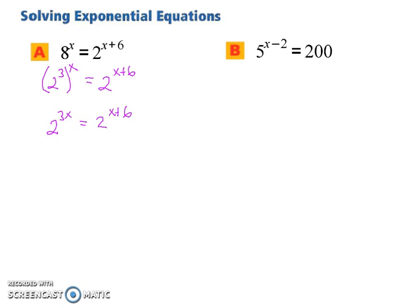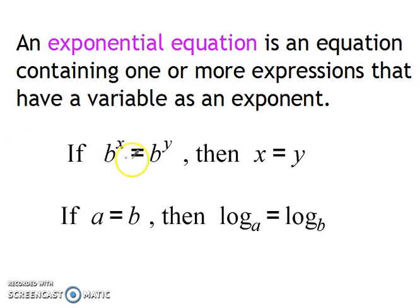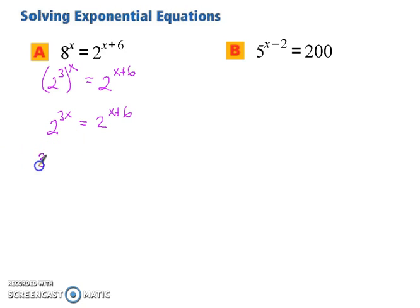And just like we saw here, when the bases are the same, that means the exponents are going to have to be equal if the statements are equivalent. So this means we have 3x equals x plus 6. And now we simply solve for x. So subtract x from both sides. We're left with 2x equals 6, which means x must equal 3.